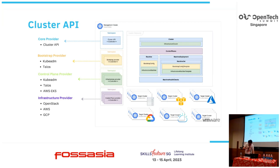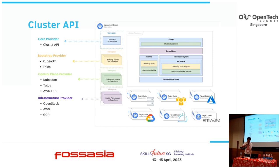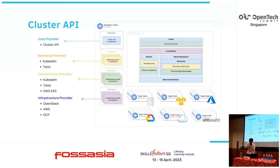Then we have the infrastructure provider, where you have your different infrastructure environments — on-premises, cloud, anything. For example, for cloud you have the Azure provider, AWS provider, OpenStack provider, and so on. Last, we have the control plane provider, which is responsible for managing control plane machines — making sure Kubernetes components such as the scheduler are ready.